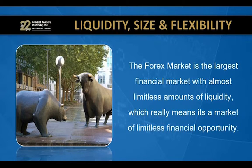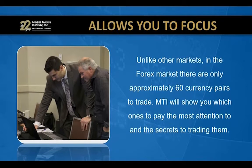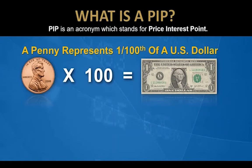Starting at about 5 o'clock Sunday all the way until about 5 o'clock Friday, you can trade forex around the clock. Compared to stocks, where there are over 40,000 different stocks you can trade, in the forex market there are only about 60 different currency pairs. We narrow that down to about 20 that you should really pay attention to, and because we have over 22 years of experience in this market, we can also help you focus on specific ones as you go along.